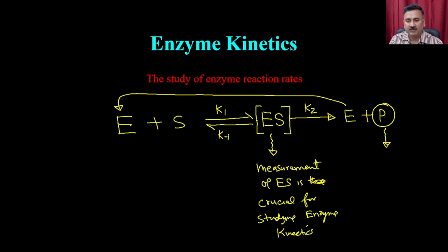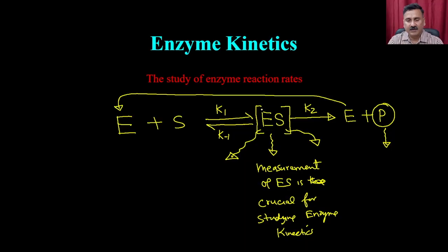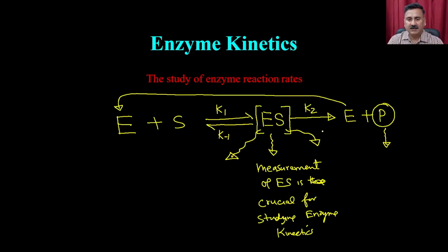The question is how you can measure the enzyme-substrate transition state or ES complex formation, because the half-life of this complex is very small. You cannot isolate or trap the enzyme-substrate complex using any analytical method. Therefore, if you cannot measure the ES complex directly, you have to make different types of assumptions.